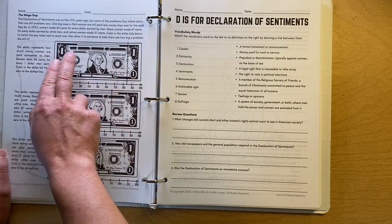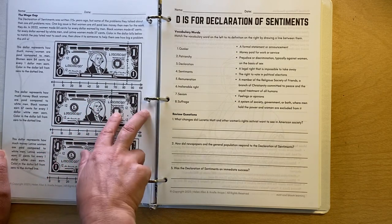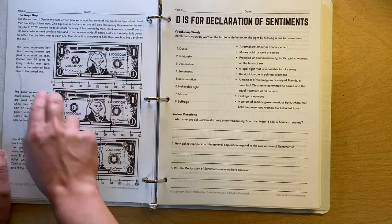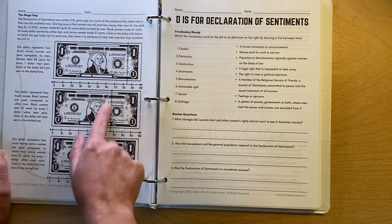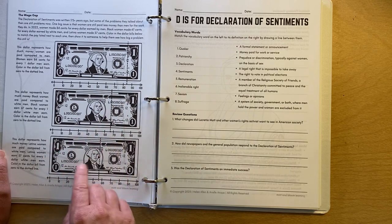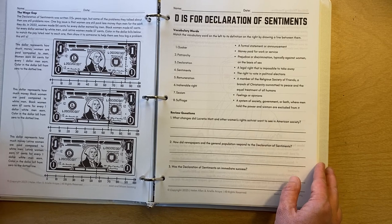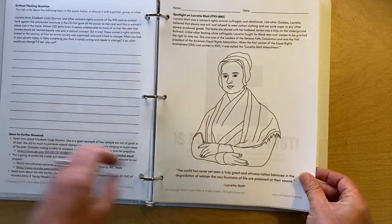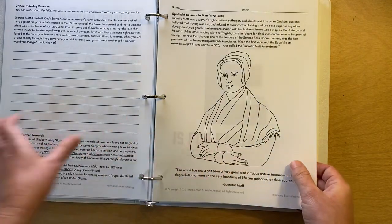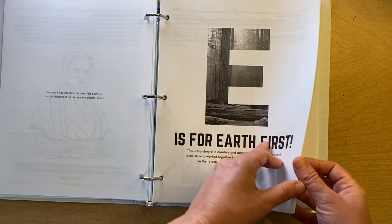We have a wage gap page that invites kids to see how much money women, black women, and Latina women earn compared to white men here and men in general here. They color the dollar bill up to the dotted line, and that's a graphic representation of this stark inequality in wages. Here's our, you know it. You've seen it. Comprehension, critical thinking, and spotlight. E is for Earth First.